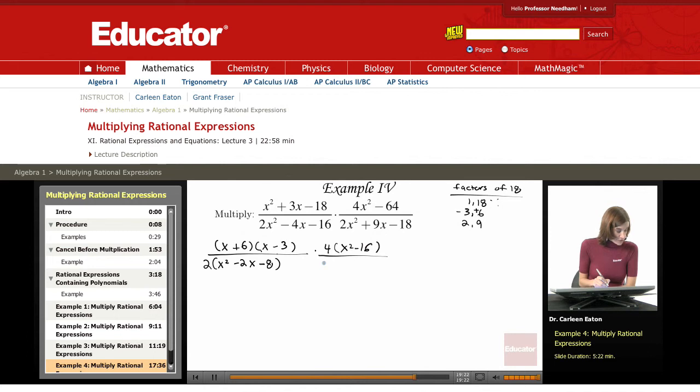Down here I do not have a common factor between 2, 9, and 18, so I'm going to leave that as it is.